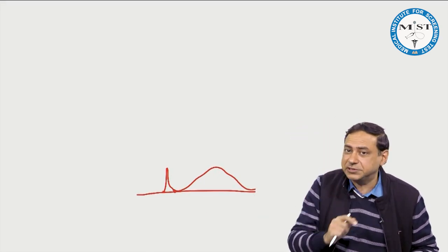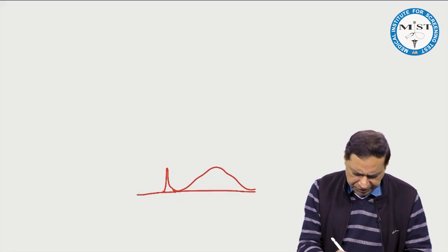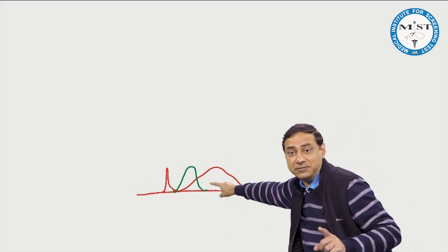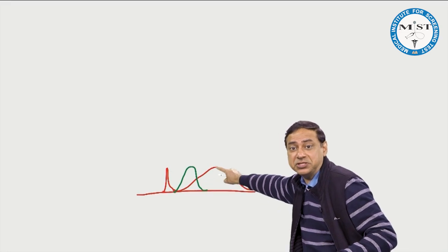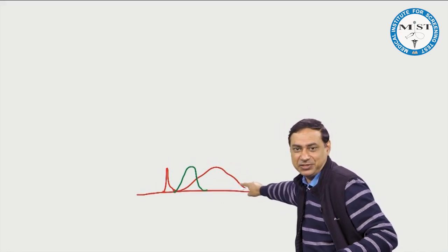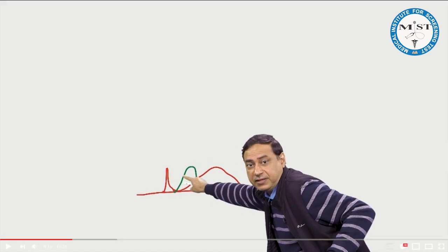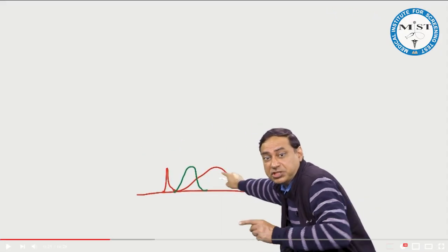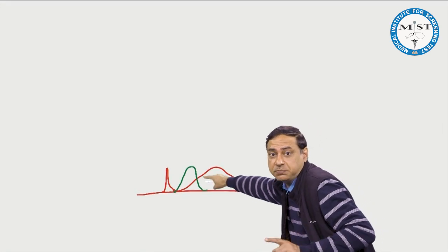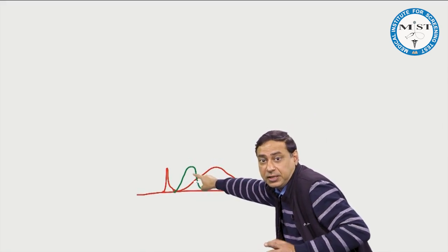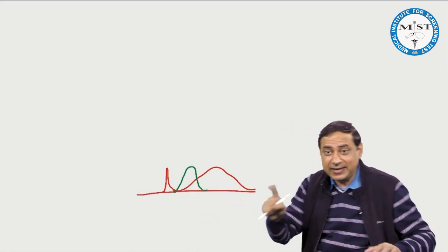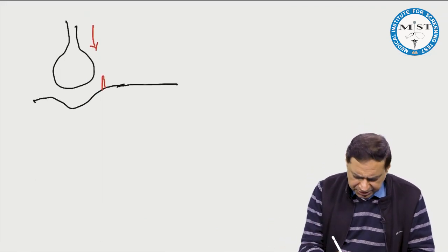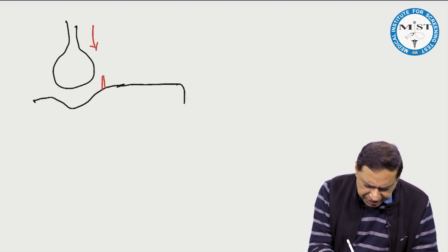The question is: how does the action potential lead to contraction? This contraction is because of calcium. The action potential is followed by a sudden increase and sudden decrease in intracellular calcium, which is responsible for contraction followed by relaxation — a calcium spark causing the twitch.